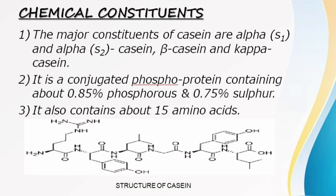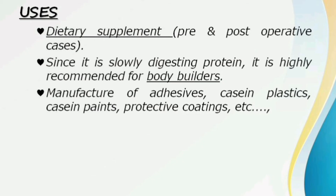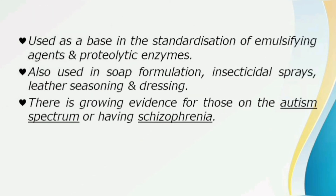This is a structure of casein — if you are familiar with the structure, you can write it in the exam as well. The main use is as a dietary supplement, including pre-operative and post-operative nutrition. Because casein is a slow digesting protein, bodybuilders use casein and whey protein, as it stays in the body for a long period of time.